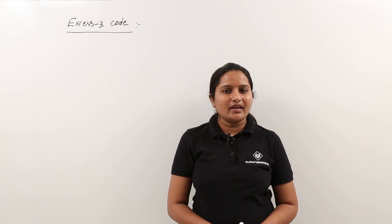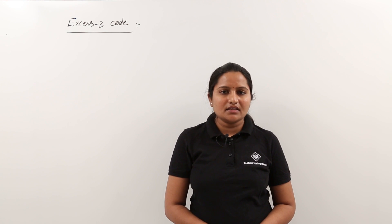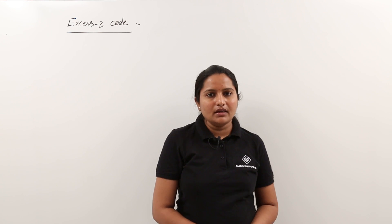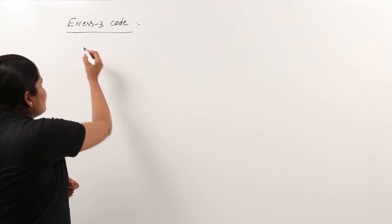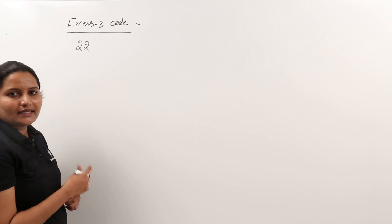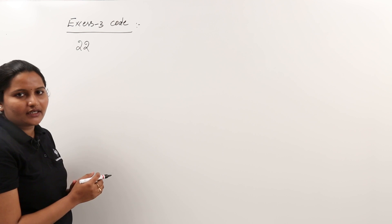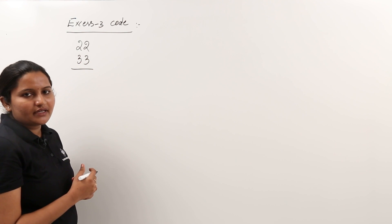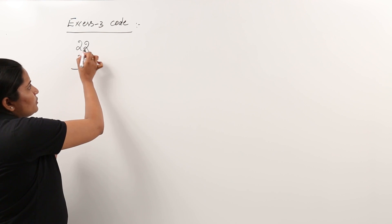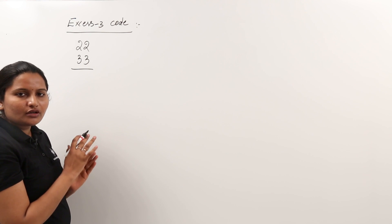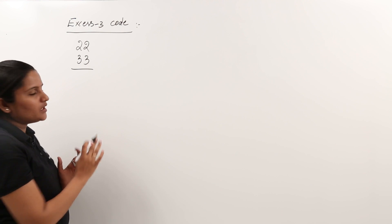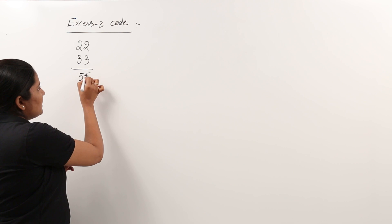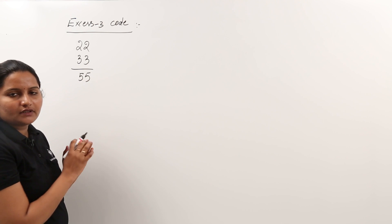For example, if you are having any number in BCD, by adding 3 to that BCD you are going to get XS3 code. For example, if you are having 22 in BCD, the XS3 code for this 22 can be obtained by adding 3 to each and every digit. So for BCD, if you want to get any XS3 code, you need to add 3 for each and every digit.